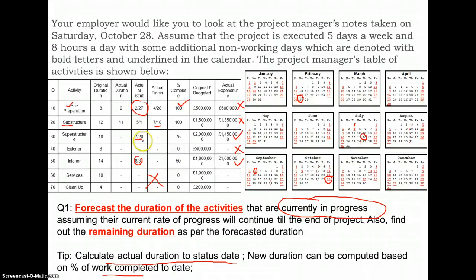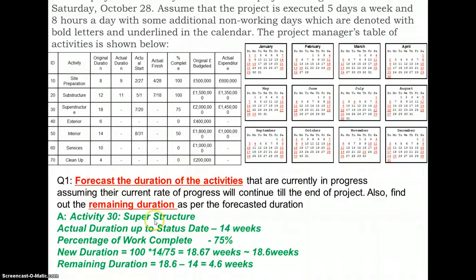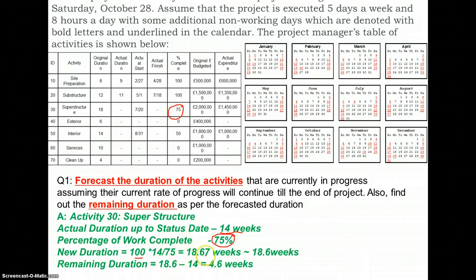We have calculated that the actual duration up to the status date has been 14 weeks. From the project data, within those 14 weeks we have delivered 75% of the work. So if 75% of the work is delivered in 14 weeks, 100% of the work would be delivered in — by simple proportion — 18.6 weeks. Of those 18.6 weeks, 14 have already elapsed, so 4.6 weeks are remaining. As we are reporting progress on 28th of October, this activity will take almost four and a half more weeks.